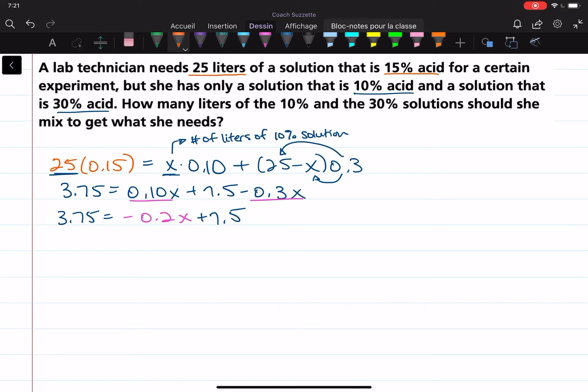Let's keep going. Inverse operation of addition and subtraction, minus 7.5 on both sides. And then we have 3.75 minus 7.5, which gives us negative 3.75 equals negative 0.2X.